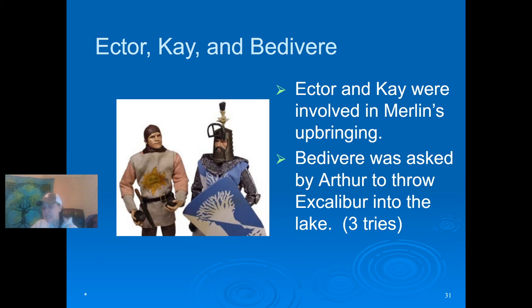Some sources say that Kay was a Saxon, and there are different accounts of Sir Kay's death. Throughout Welsh literature it is claimed that he was killed by Gwydawg, who was in turn killed by King Arthur, but it is also said that he could have been killed by the Romans or in the war against Mordred.